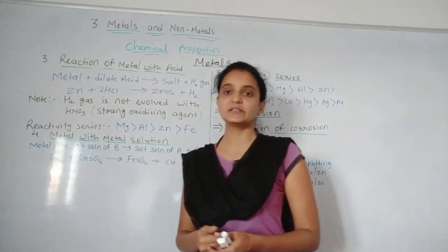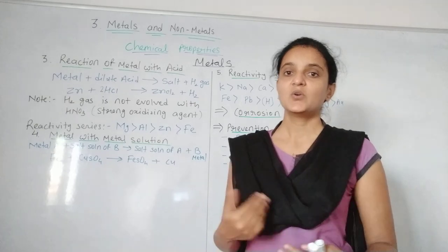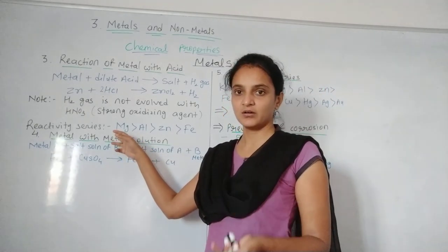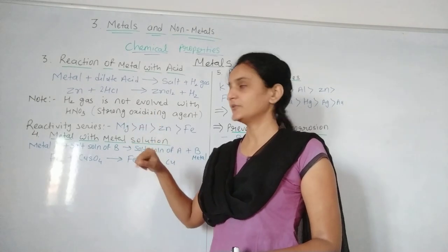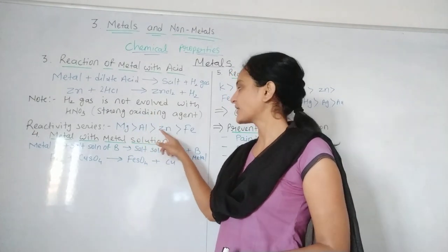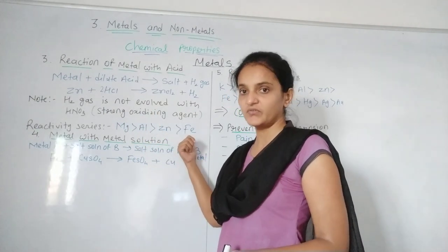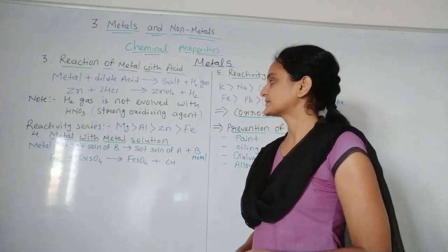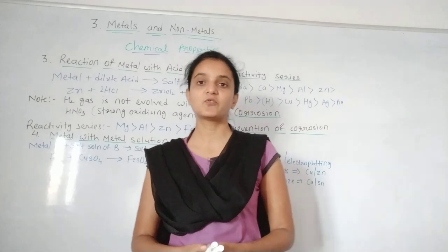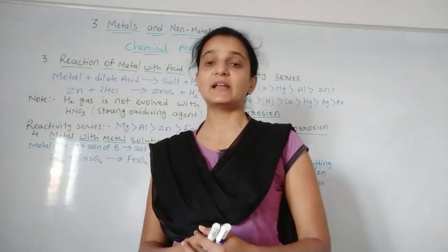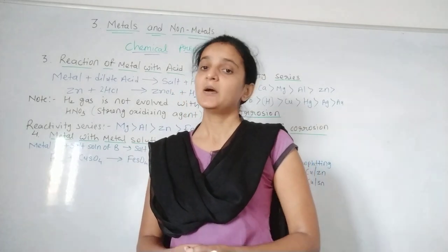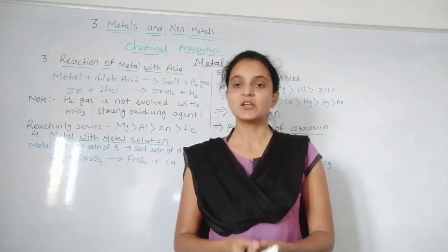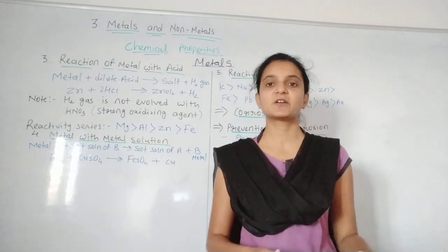Here is the reactivity series of metals with acid: magnesium is highly reactive with dilute acid, then aluminum, then zinc, then iron. Some metals like copper do not react with dilute acid, but might react with concentrated acid. That is the reactivity of different metals with acids.